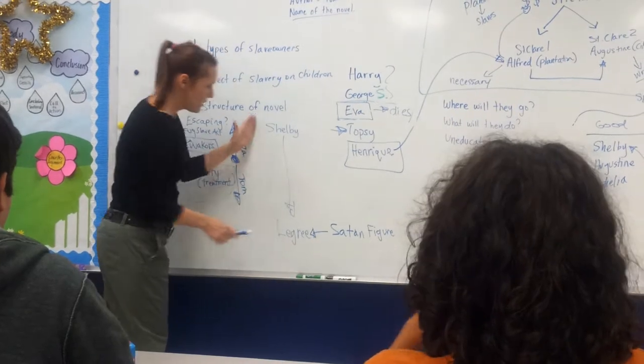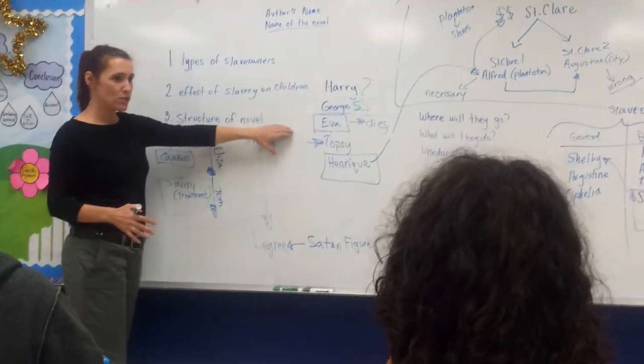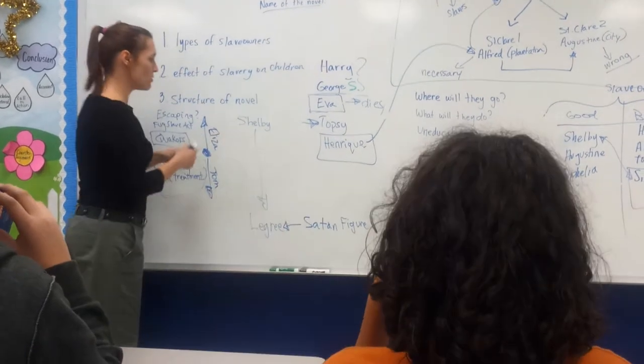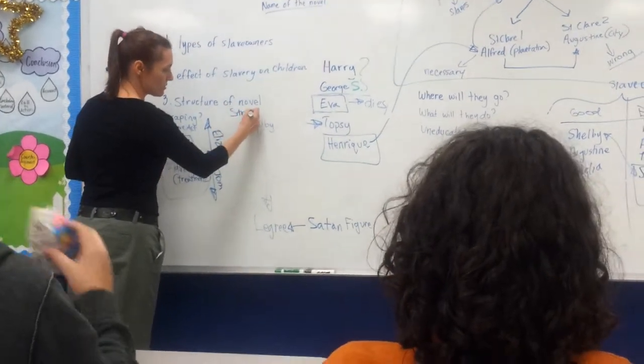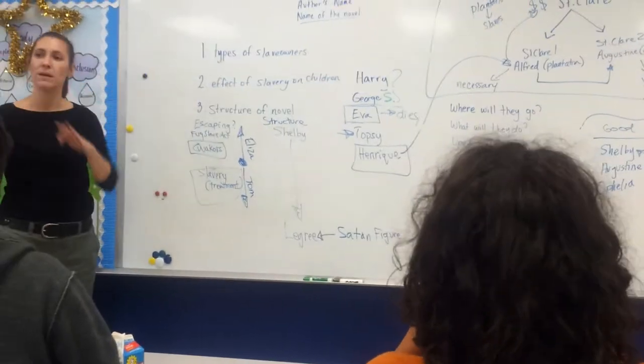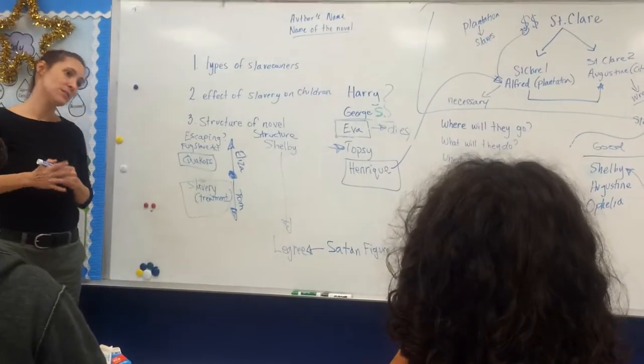So by creating it this way, you have, you know, a Christ figure created in Tom, and a Satan figure created in LeGree. So that's what you could address with this type of structure. But you see how both of these address how it's actually organized on the page, and what could be possible reasons for that.